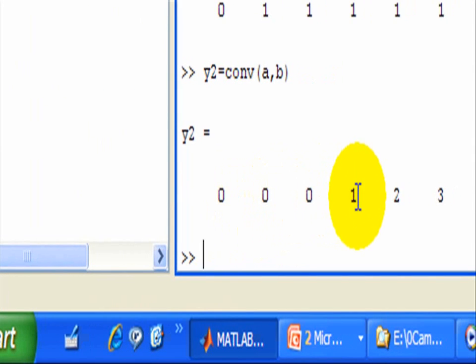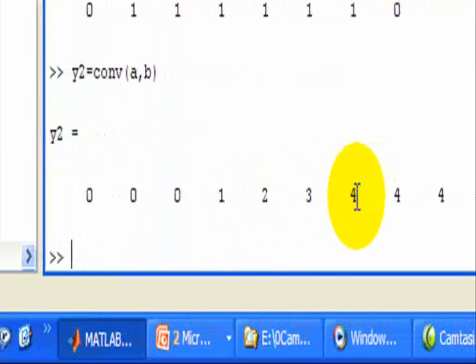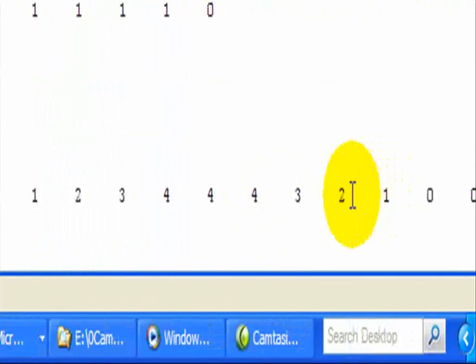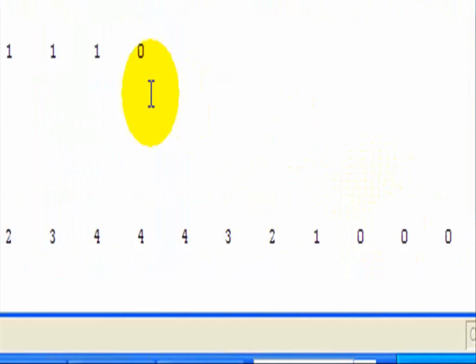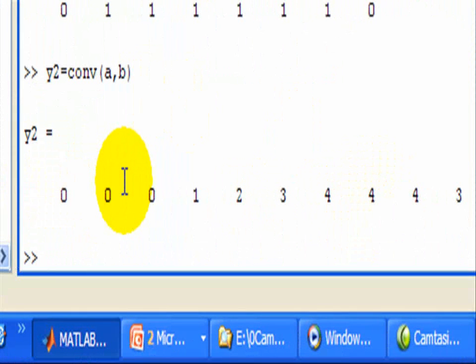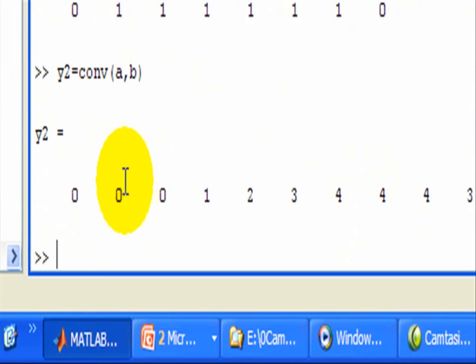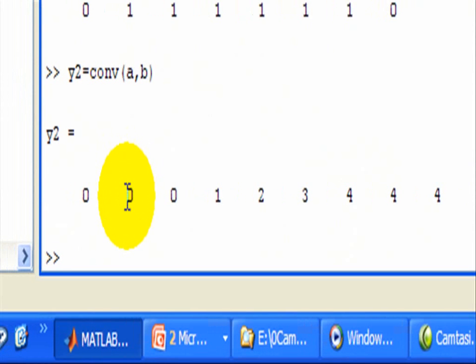We have 0s, then it starts to ramp up, then flattens out, and then ramps down again. These are examples of how we use the convolution function to demonstrate the interaction of the input signals and the impulse response. In this case, we use two pulses, one with the same width and the other with different widths. And it always results in an output that is wider than either of the input or the impulse response.